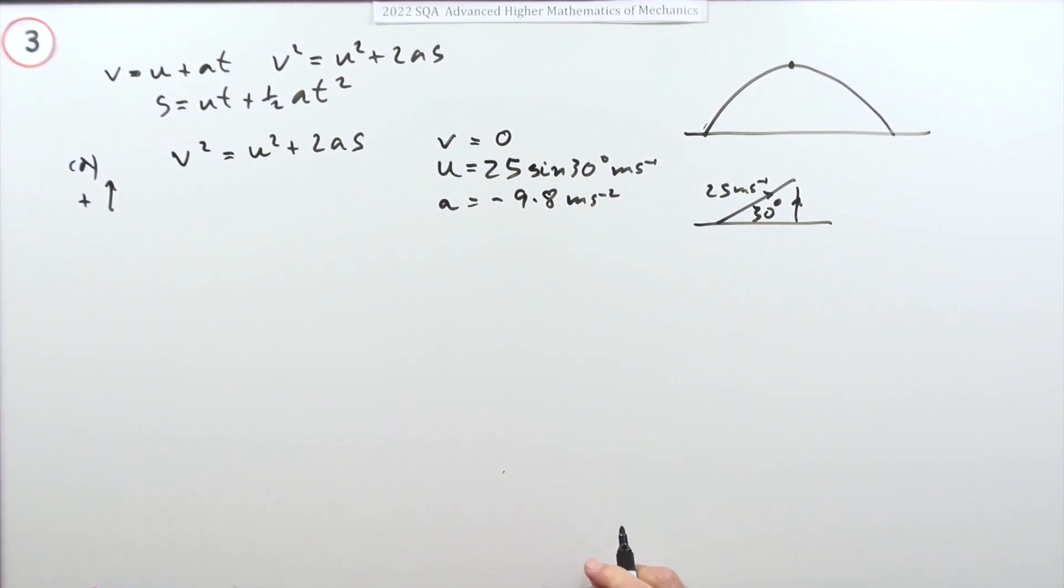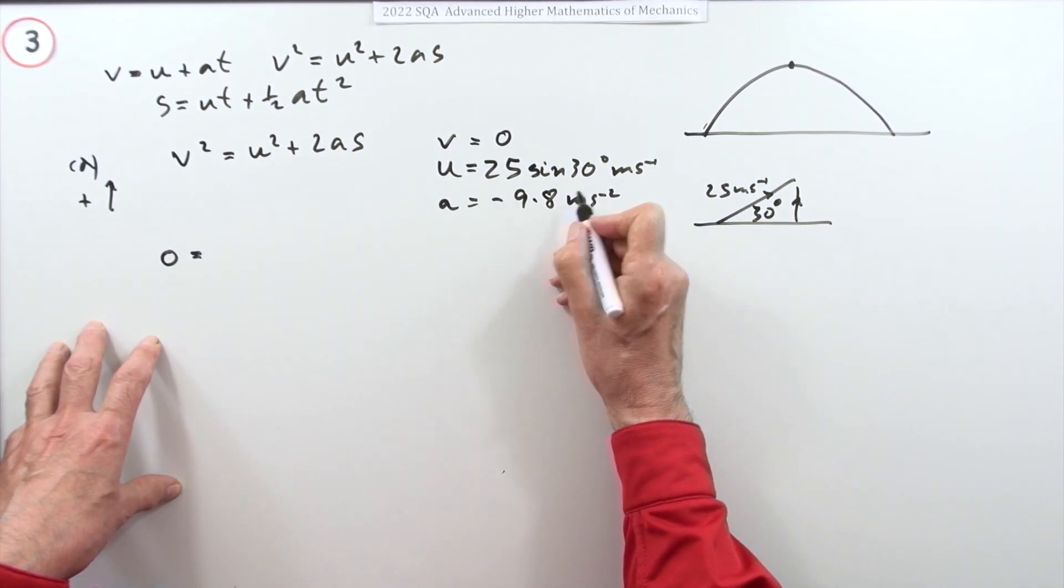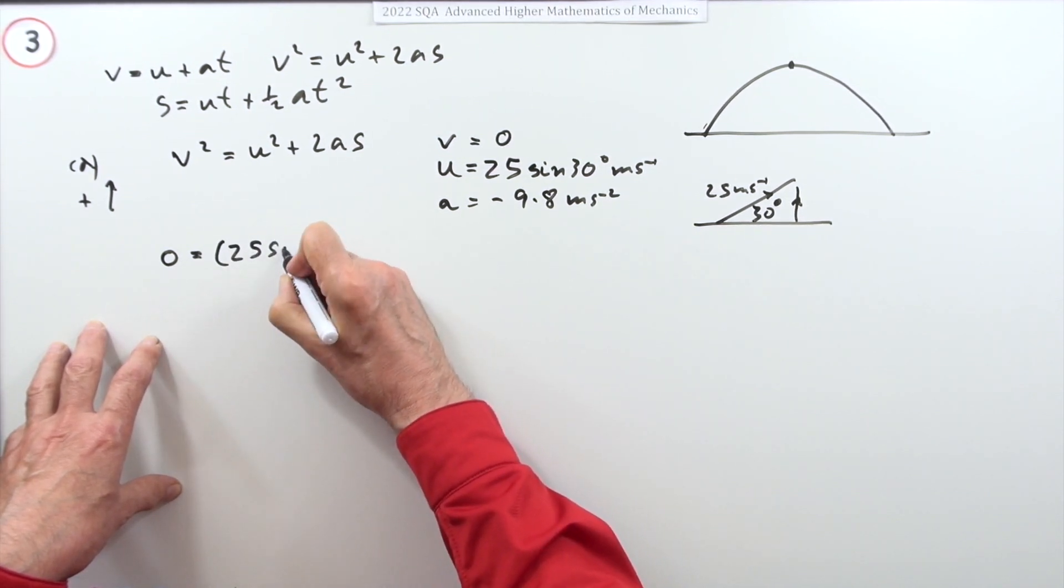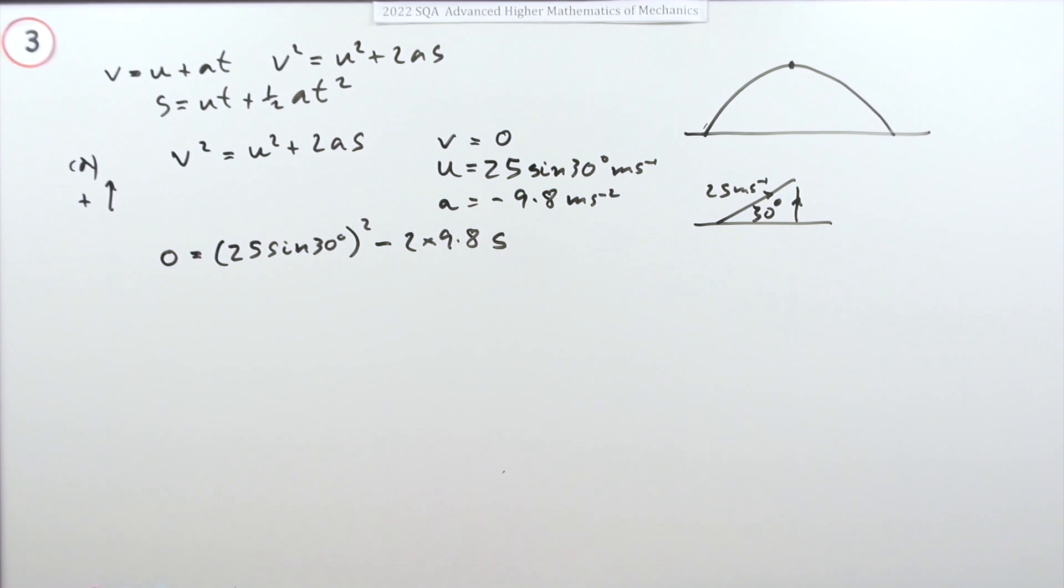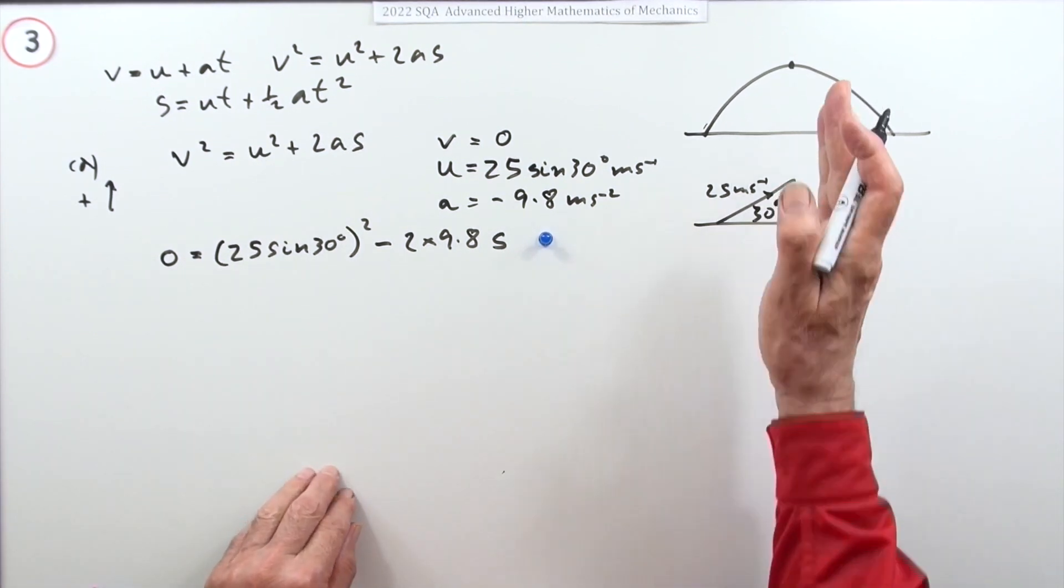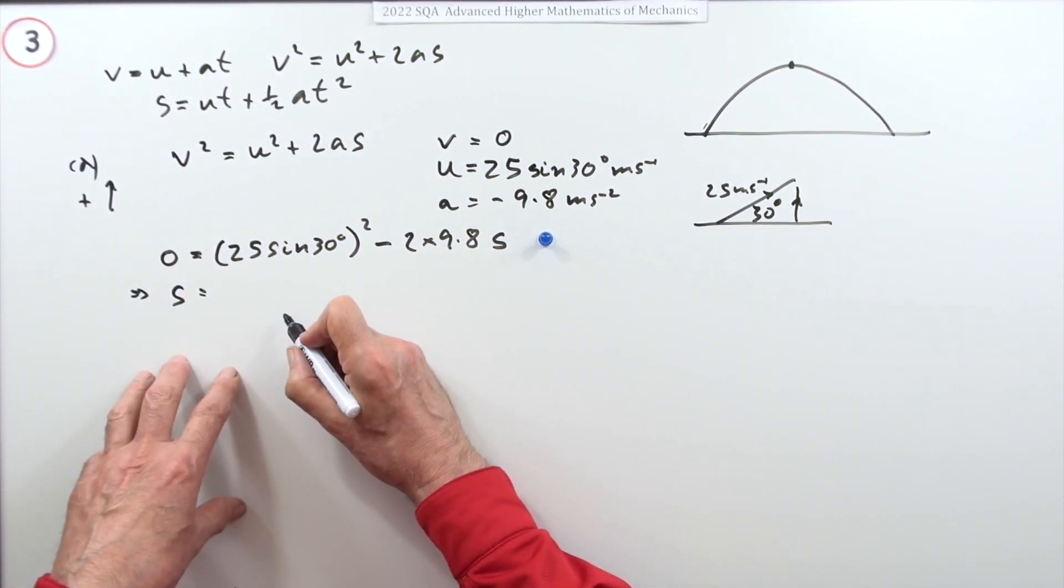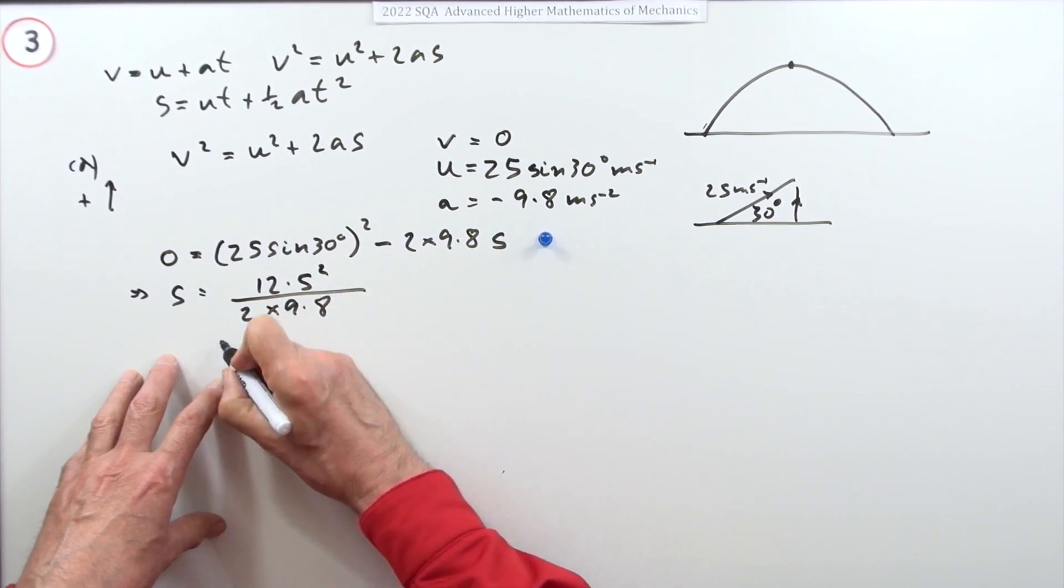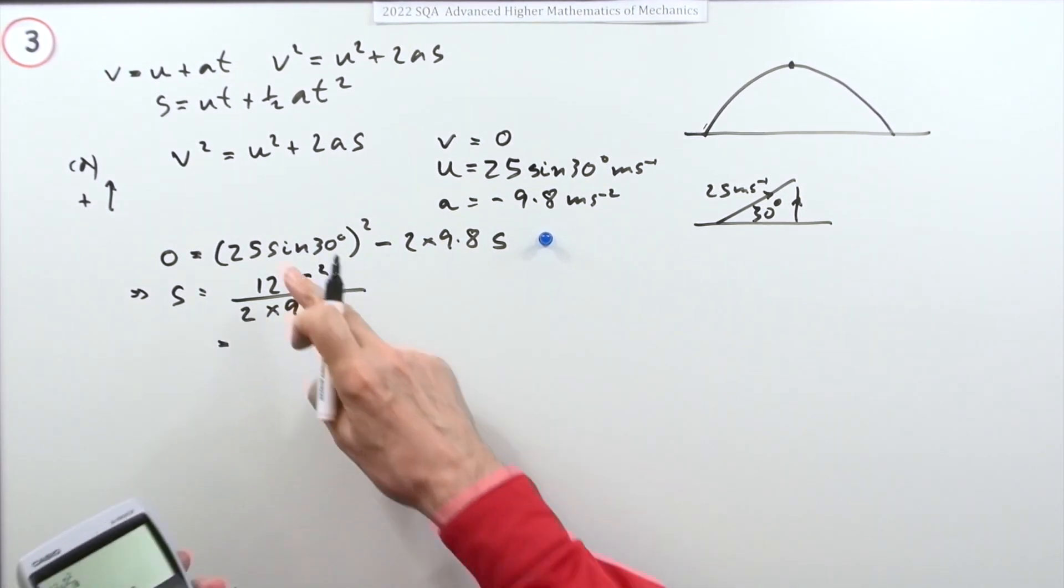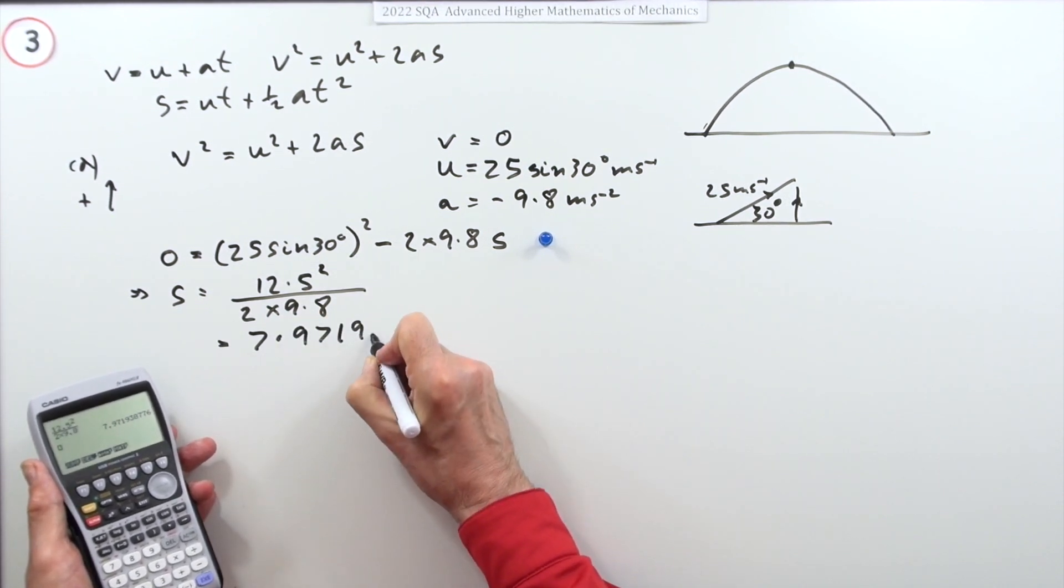Put it all into this. We've got zero equals 25 sine 30 squared minus 2 times 9.8s. That's the first mark for choosing the appropriate equation and putting in the correct speed. Just rearranging that gives s equals 12.5 squared divided by 2 times 9.8. You press the button and you get 7.9719 and so on.